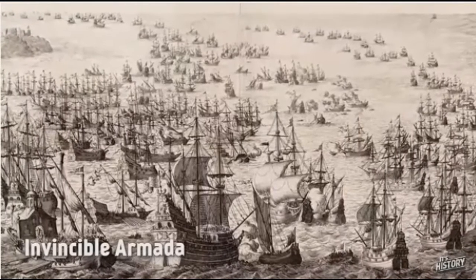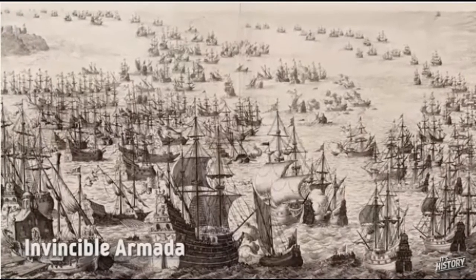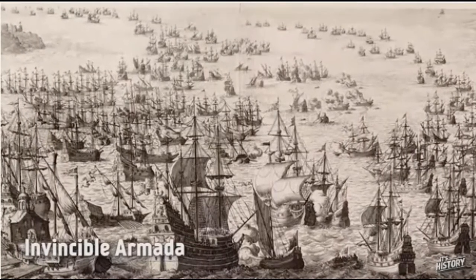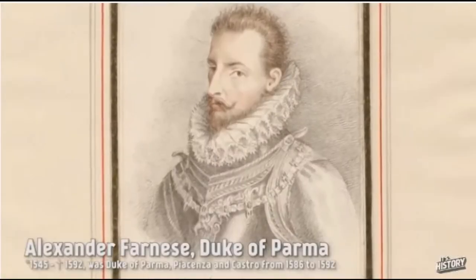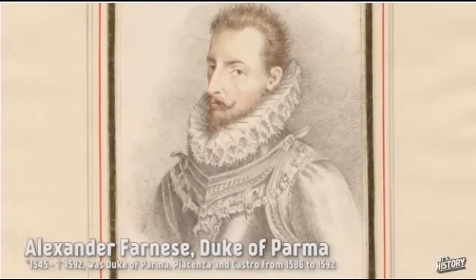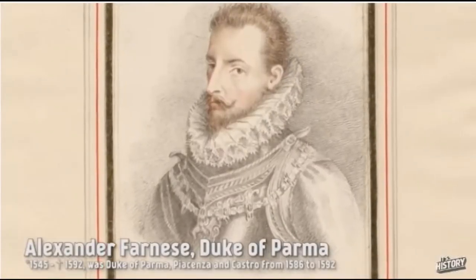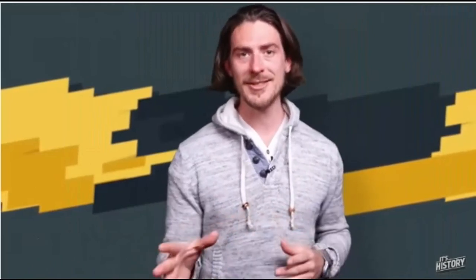Commanded by the Duke of Medina Sidonia, the Armada was to meet up with an invasion force under the Duke of Parma in Flanders. The army would then cross over and land in the south of England, quickly seizing London.